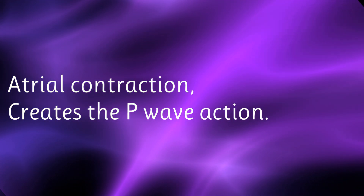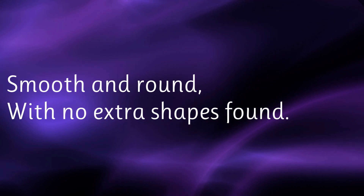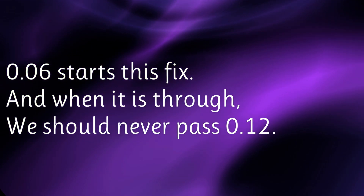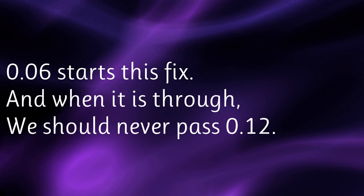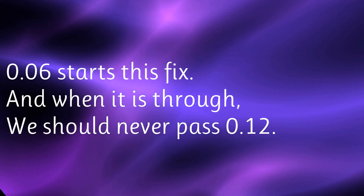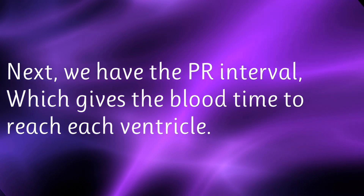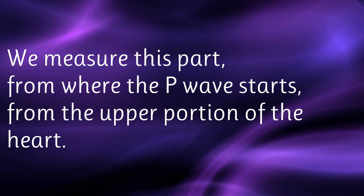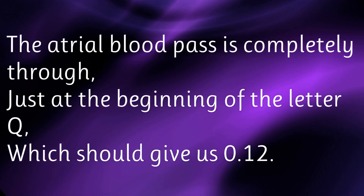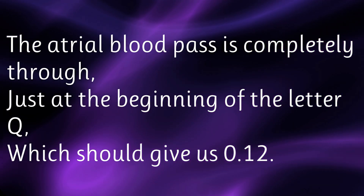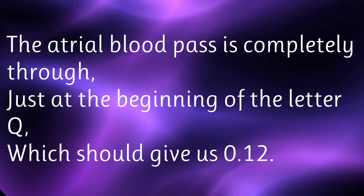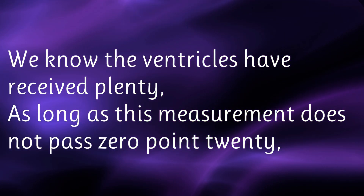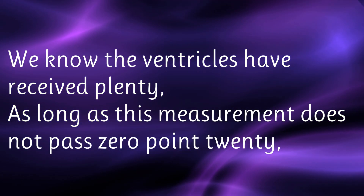Atrial contraction creates the P wave action — smooth and round with no extra shapes found. 0.06 starts this fix, and when it is through we should never pass 0.12. Next we have the PR interval, which gives the blood time to reach each ventricle. We measure this part from where the P wave starts from the upper portion of the heart. The atrial blood pass is completely through just at the beginning of the letter Q, which should give us 0.12. We know the ventricles have received plenty as long as this measurement does not pass 0.20.